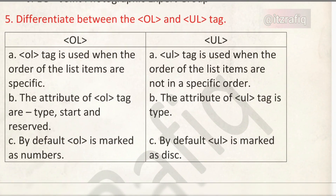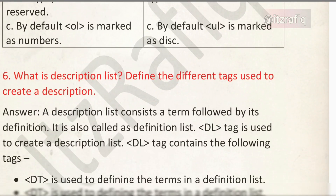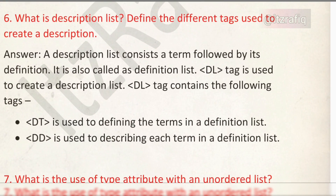Number five: difference between OL and UL. An ordered list is used when the order of list items is in a specific order, and an unordered list is used when it is not in a specific order. In an ordered list, we can use attributes: type, start, and reversed. In an unordered list, there is just one attribute: type. By default, ordered list items are marked as numbers and unordered list items are marked as discs.